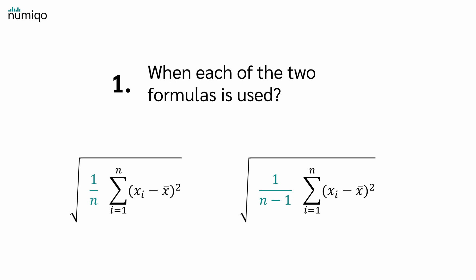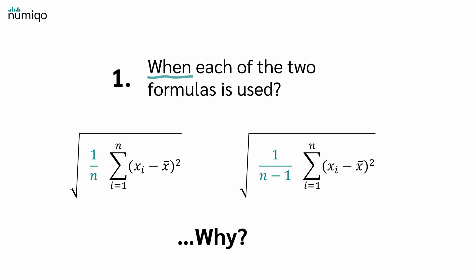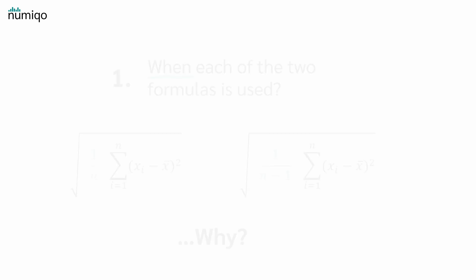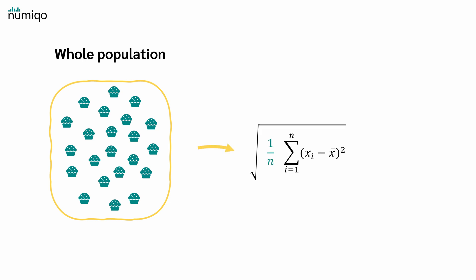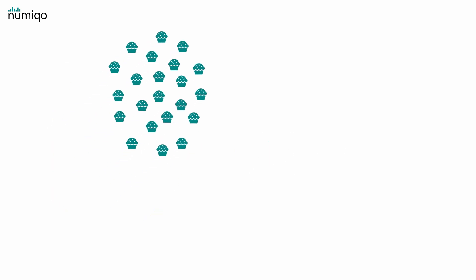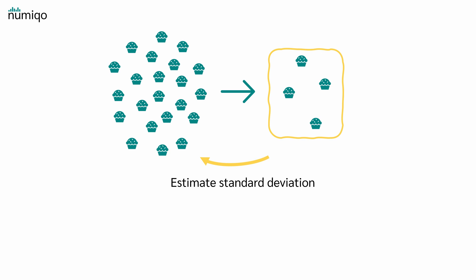Now we can already answer the first question — the when. When do we use the formula with 1 divided by n, and when the one with 1 divided by n-1? If we have the whole population — say we weighed all 100 muffins — and we want to calculate the standard deviation, we use the formula with 1 divided by n. But if we only have a sample and want to estimate the standard deviation of the entire population, we use the formula with n-1.